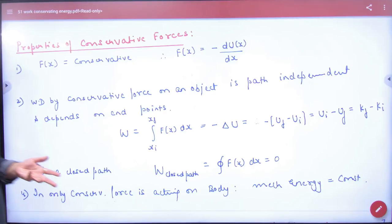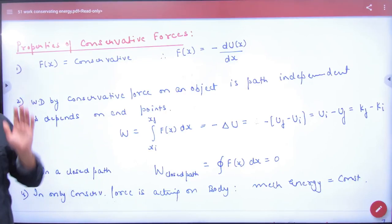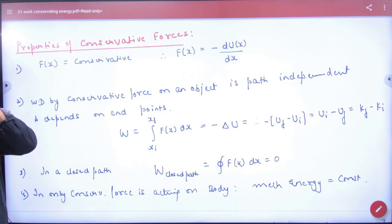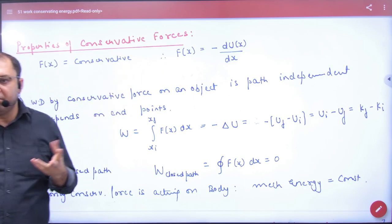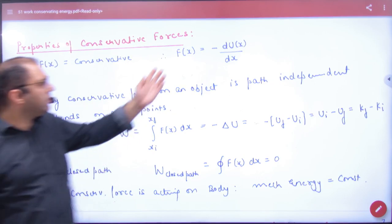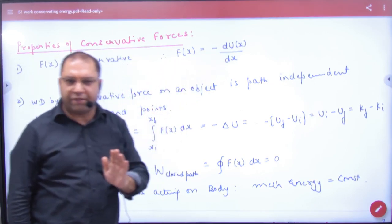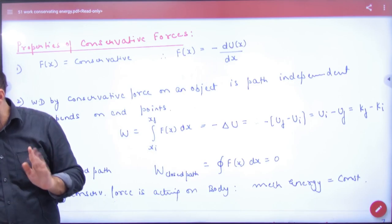Conservative forces - some properties. Conservative forces first property: F(x) = -dU/dx. It's a function of x. F is equal to minus dU by dx, first property.